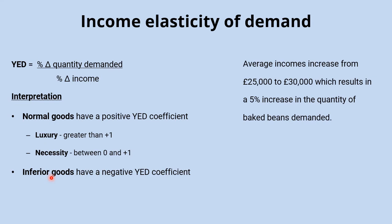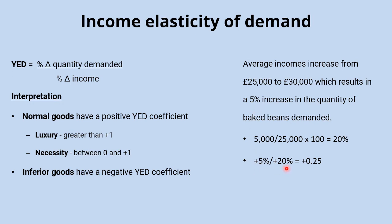For a quick example: imagine incomes impact on the quantity of baked beans demanded. Incomes rise from £25,000 to £30,000 — a 20% increase. Using the formula, we take the percentage change in quantity demanded (5%) divided by the percentage change in income (20%), giving us positive 0.25. It's positive, so it's a normal good; between zero and one, so it's a necessity — demand is income inelastic.